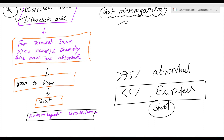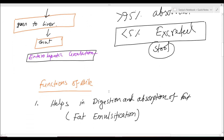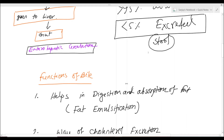What are the functions or utility of bile — that is bile acid or bile salt? The number one function of bile acid is that it helps in the digestion and absorption of fat. Fat digestion and absorption is aided by bile acid.